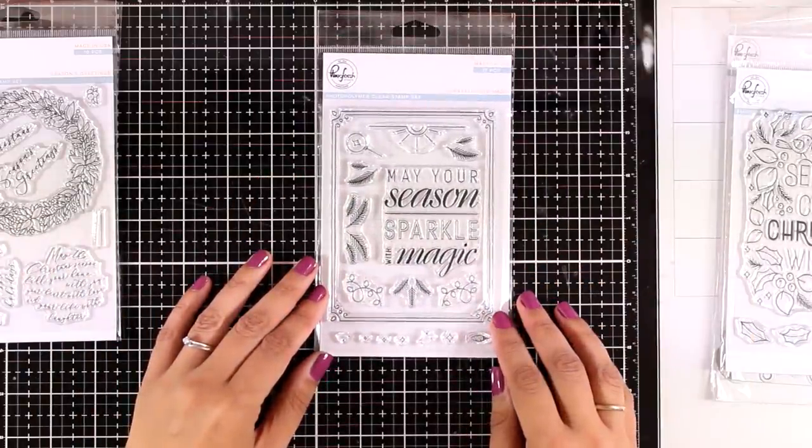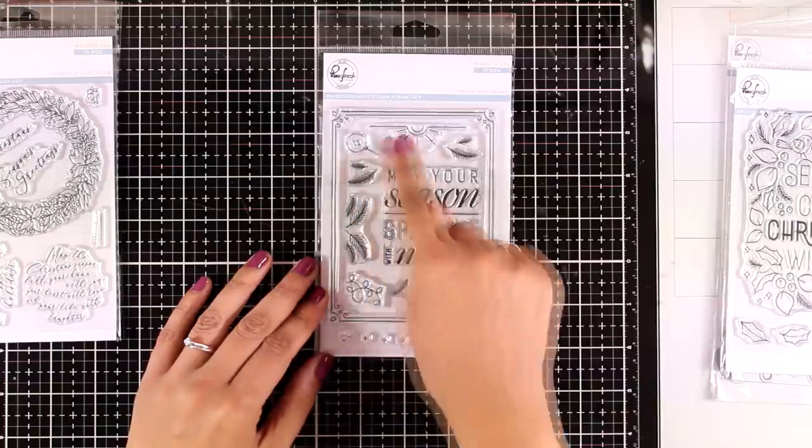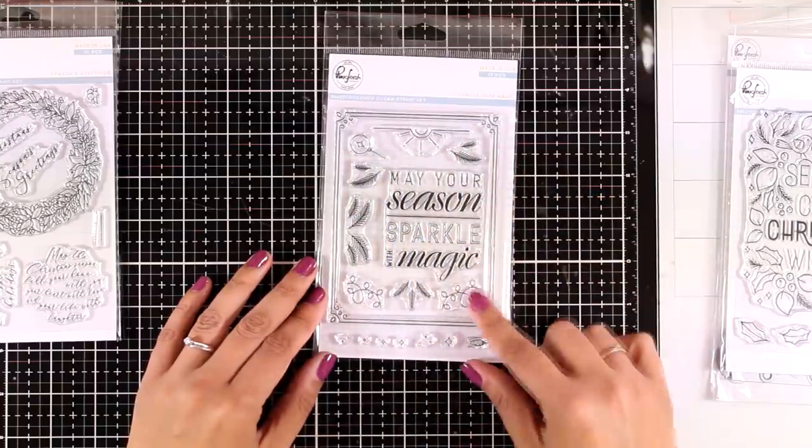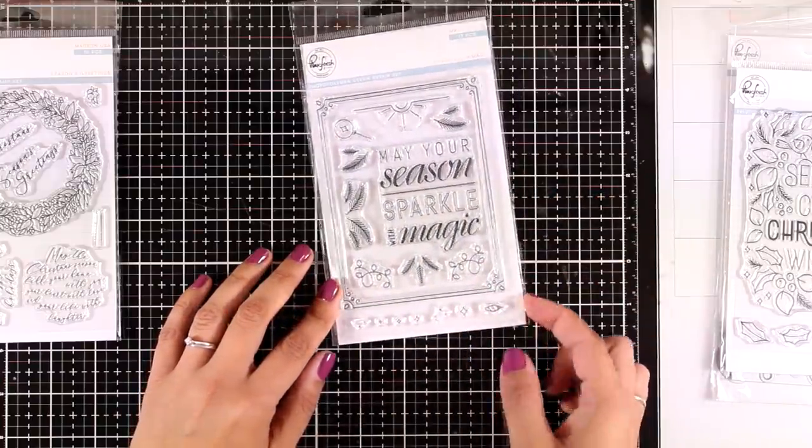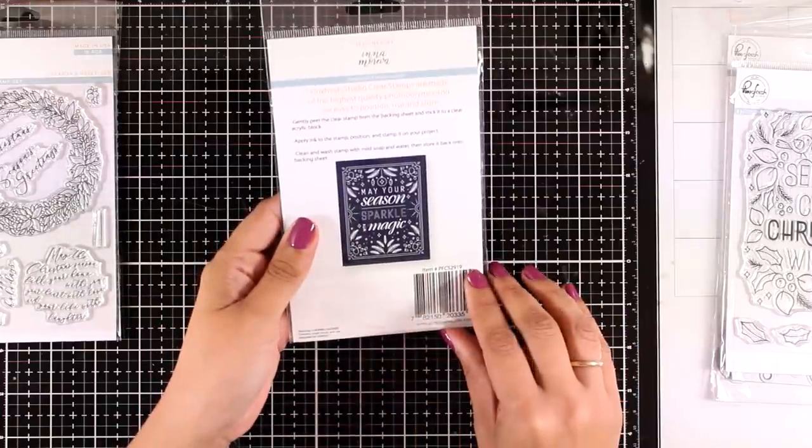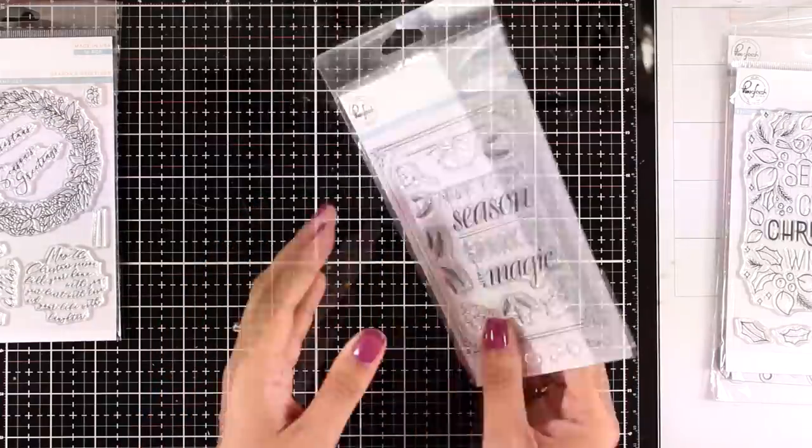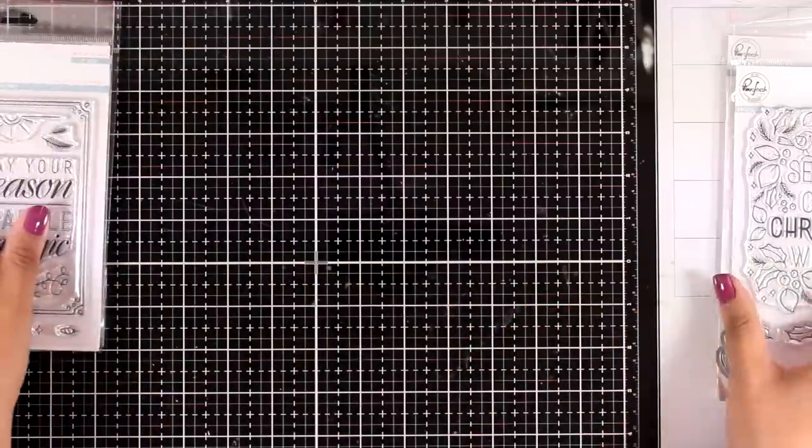This stamp set is called Sparkle with Magic. It gives you loads of bits and pieces to create your own background as well as a lovely frame that you can stamp. You can see an example at the back. You can mix and match all those elements to create your very own backgrounds.